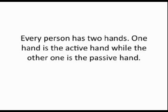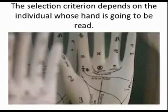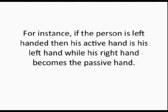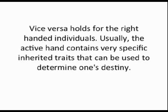Almost everybody has two hands. One hand is the active hand, while the other one is the passive hand. The selection criteria will depend on the individual whose hand is going to be read. For instance, if the person is left-handed, then his active hand is his left hand, while his right hand becomes the passive hand. Vice versa will hold true for right-handed individuals.